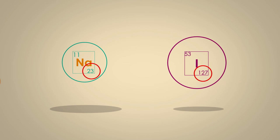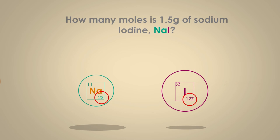Let's say we have 1.5 grams of sodium iodide, NaI. How many moles is that? The relative atomic mass, or AR, of sodium is 23 grams per mole. The relative atomic mass, or AR, of iodine is 127 grams per mole.